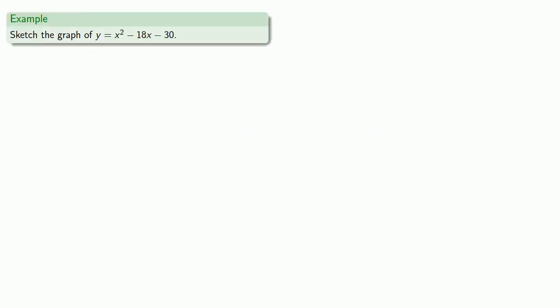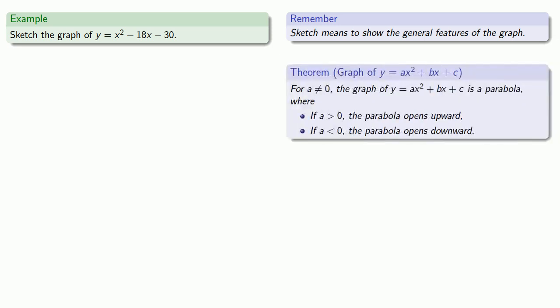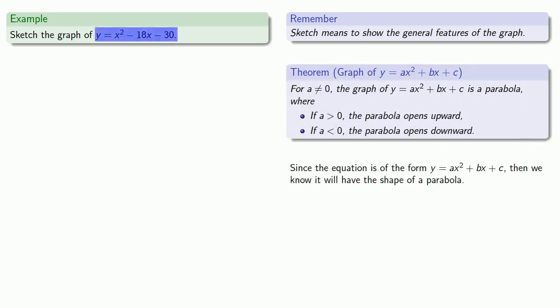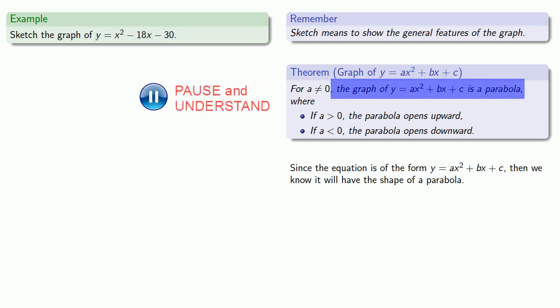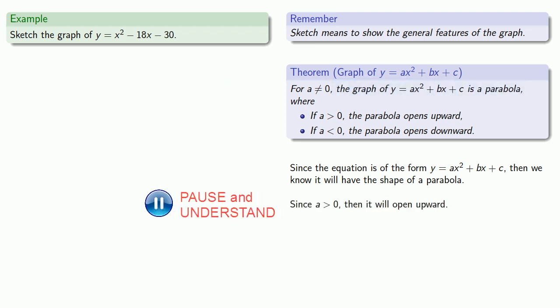So let's try to sketch the graph of y equals x squared minus 18x minus 30. When the word sketch the graph shows up, sketch means to show the general features of the graph. At this point, the only thing we really know about the shape of the graph is coming from our theorem. Since the equation is in the form y equals ax squared plus bx plus c, we know it will have the shape of a parabola. And since a is greater than zero, it will open upward — so it generally looks something like this.